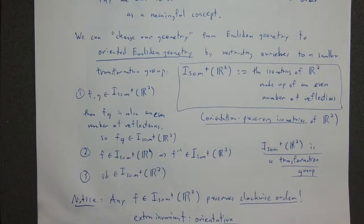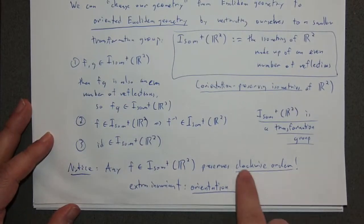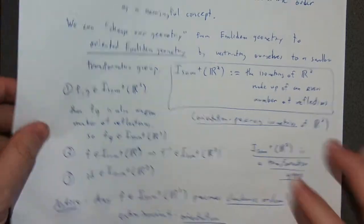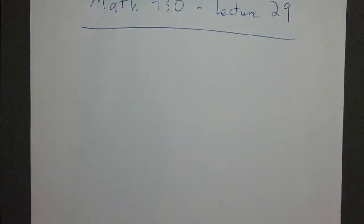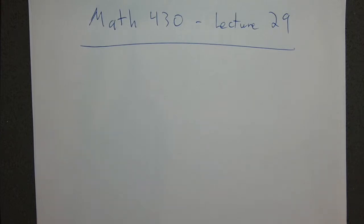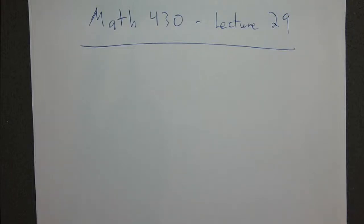This might not seem like an amazing example, but it's a simple illustration of changing the transformation group to change what the geometry is doing. You might say it's not really a totally different geometry — it's just Euclidean geometry where you can talk about a sensible notion of orientation. But understanding this clearly is going to be powerful for us going forward, as we go in the backwards direction talking about these transformation groups.